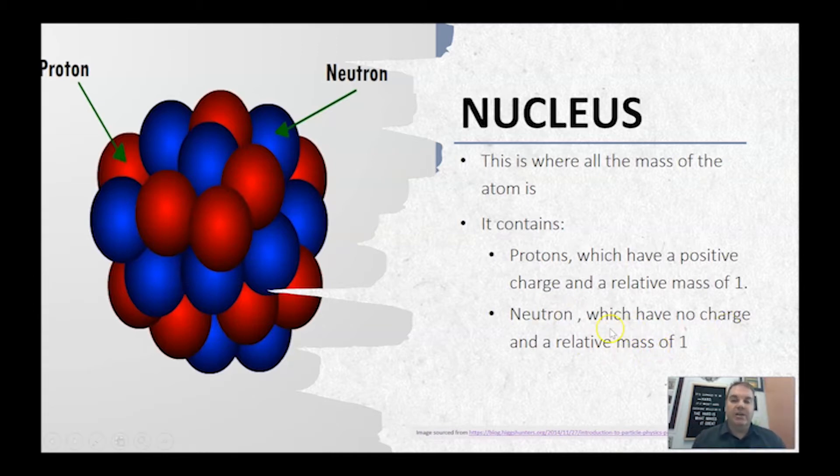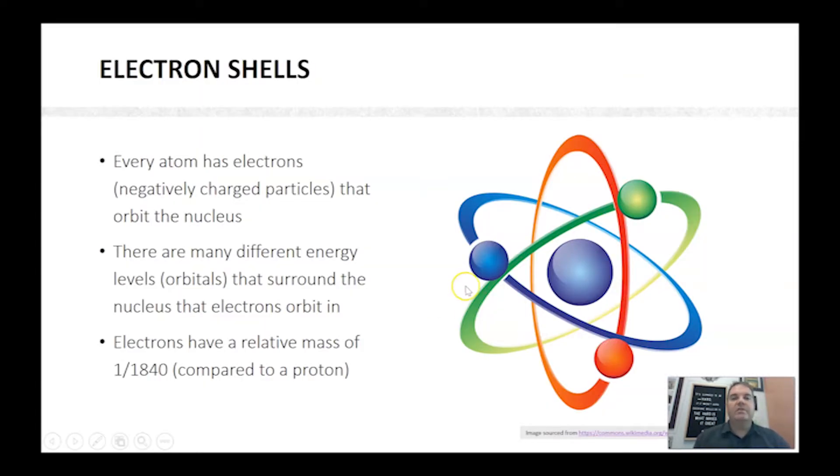A neutron has no charge. That's why it's called neutron from the word neutral. The electron shells around the outside are negatively charged. They hold the electrons in there. Now the electrons, while they have a negative charge and a proton has a positive charge, electrons have a much lower mass. So they have a mass of 1 over 1840 when compared to a proton. So when we're looking at the mass of an atom, all the mass basically comes from the nucleus where the neutrons and protons are.